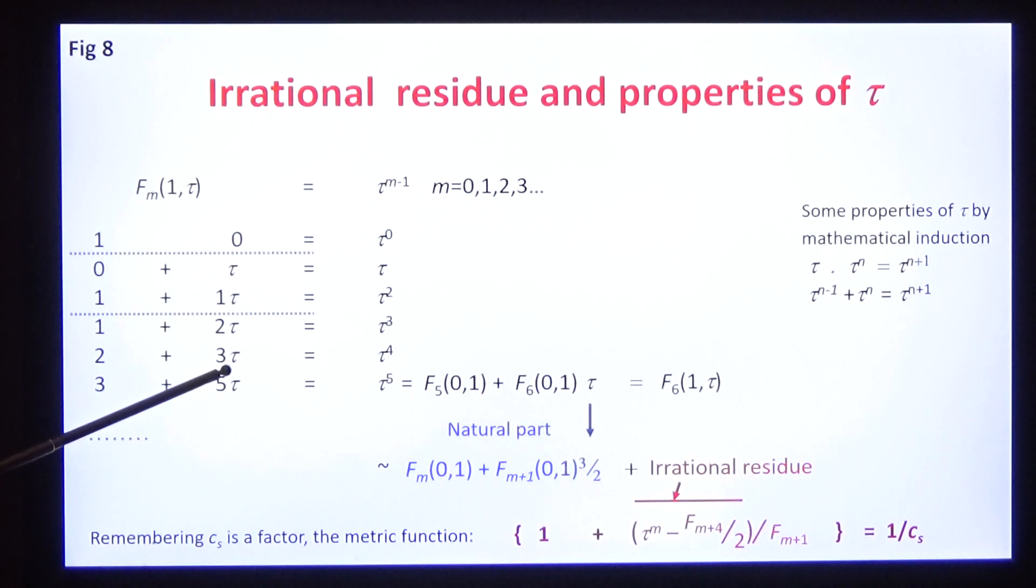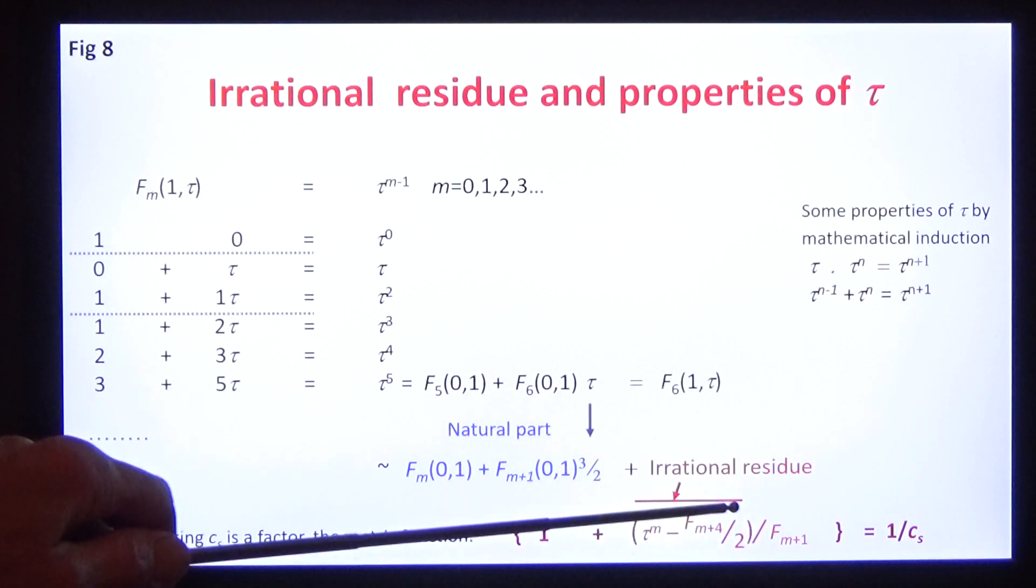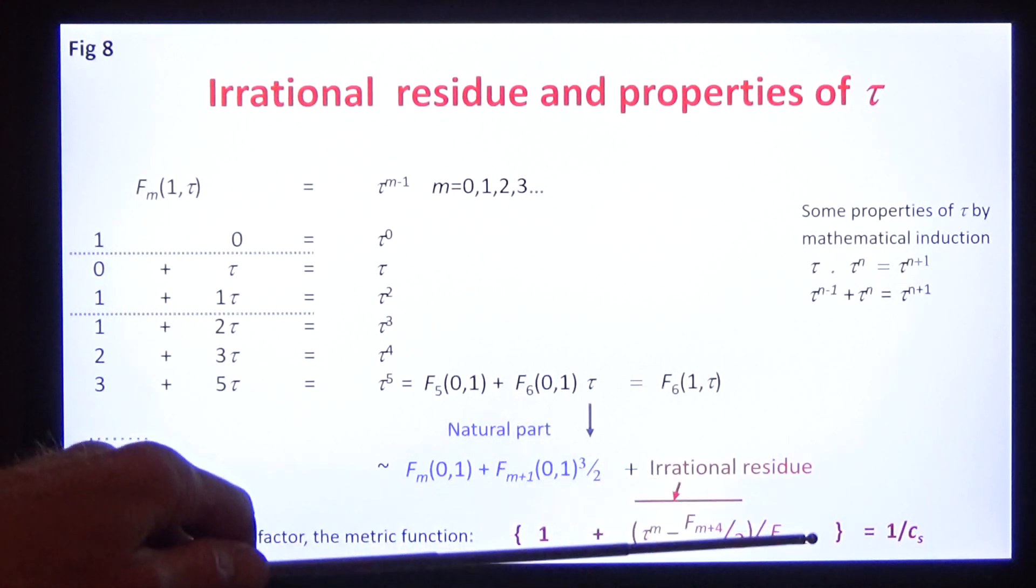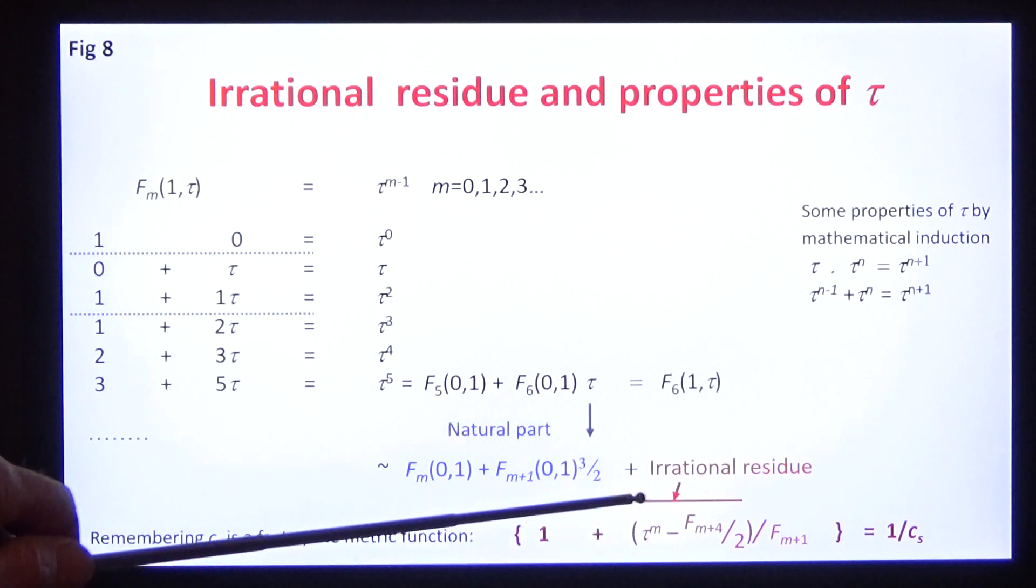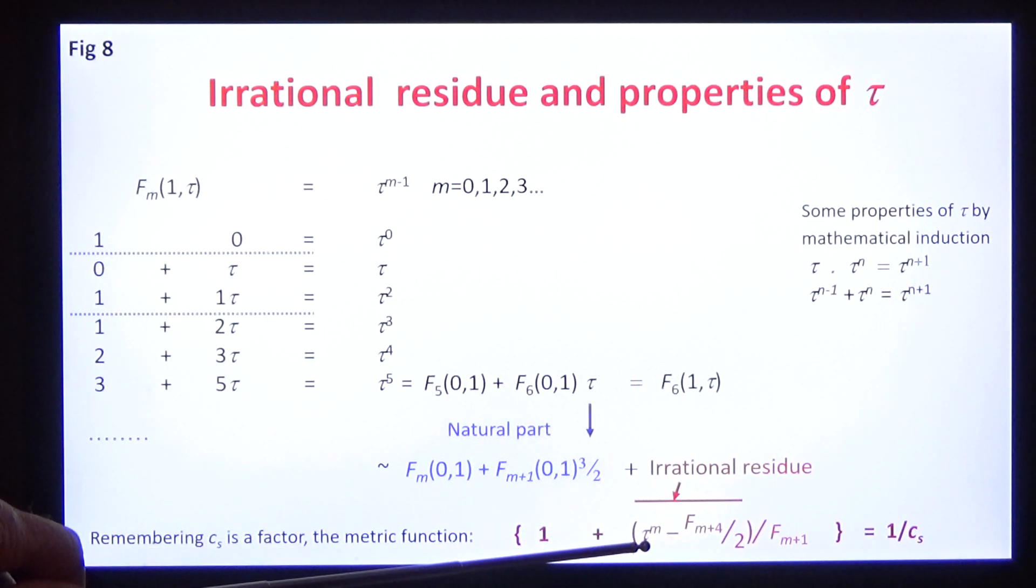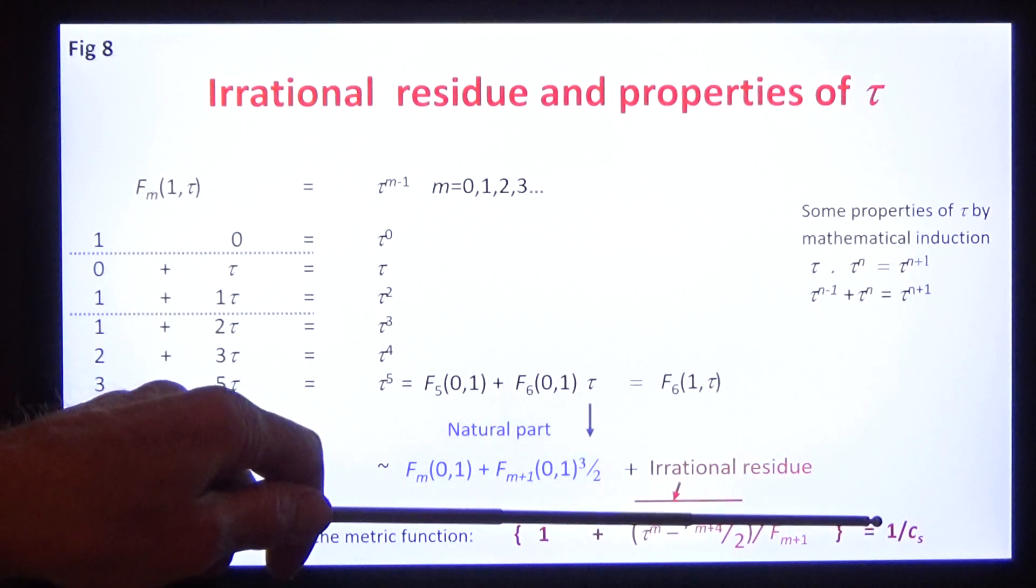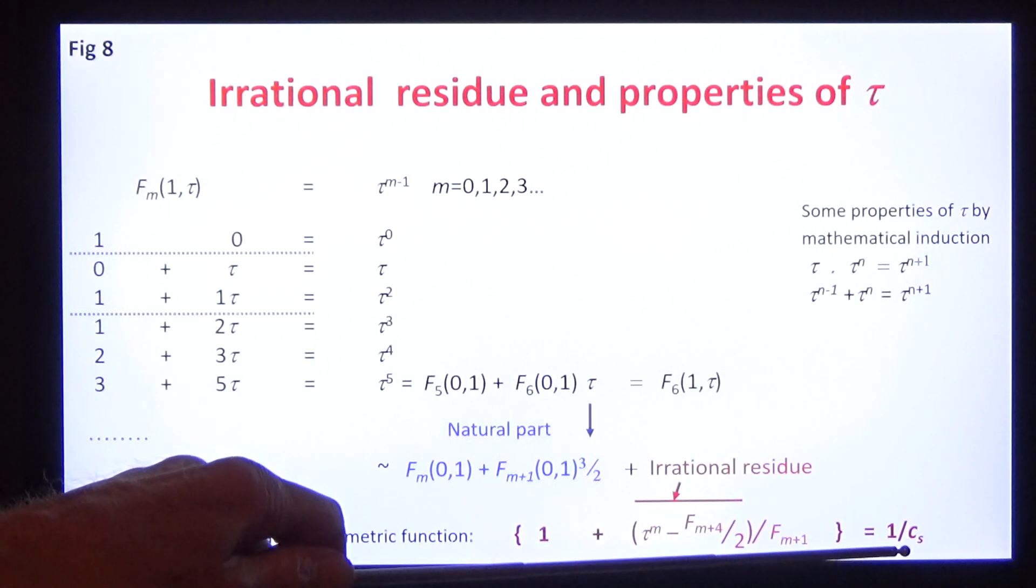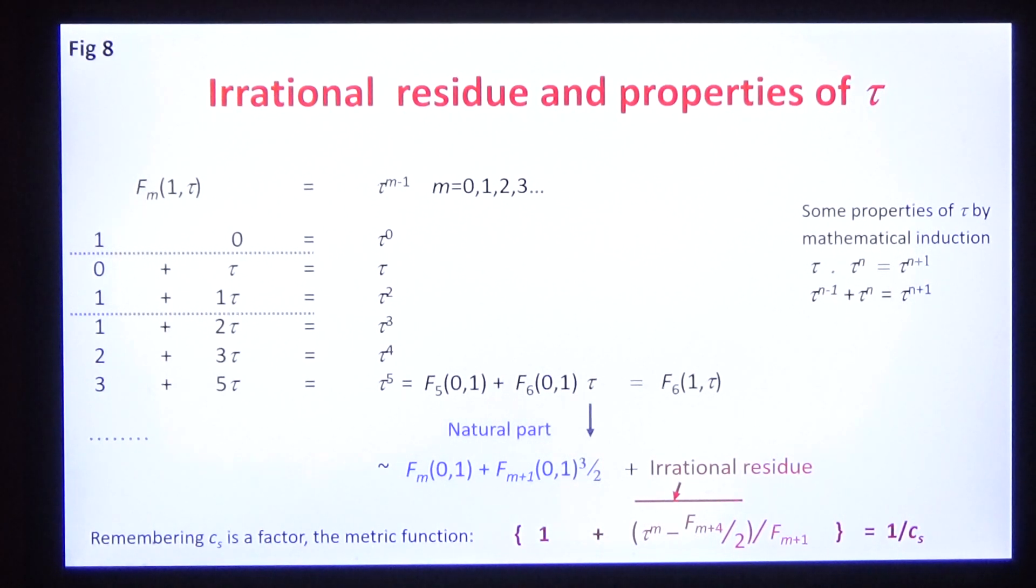We can find the irrational residue by subtracting this from the geometric series. The extraordinary result is that the irrational residue is the inverse exactly of the coherence factor that we discovered numerically by completely independent methods. So what is Cs? We're going to illustrate that with the quasi-blockwave.